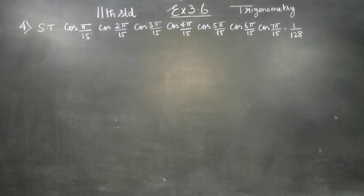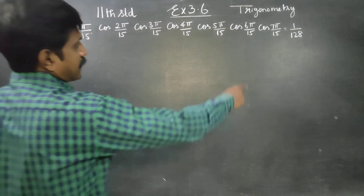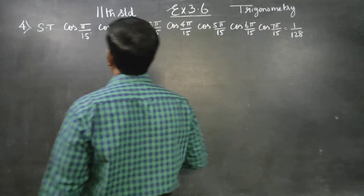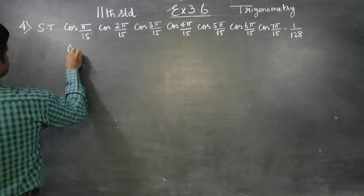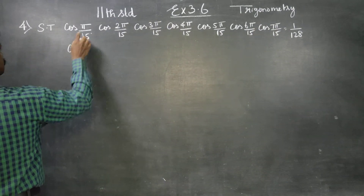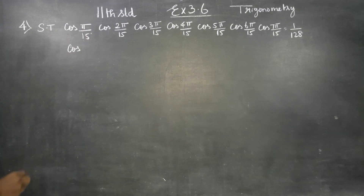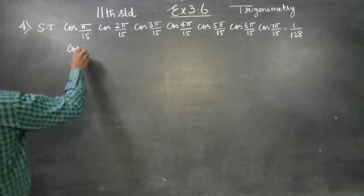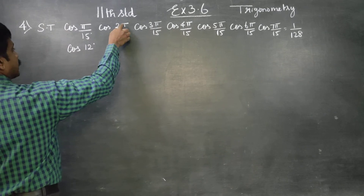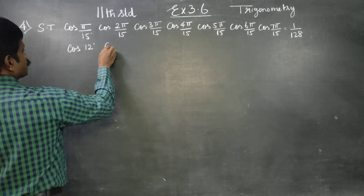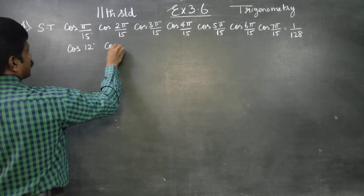Dear Levin's Standard students, in sum number 4 we have to show the answer as 1 by 128. This is because 180 by 15 gives 12, so pi by 15 is 12 degrees. Two times 12 is 24 degrees.